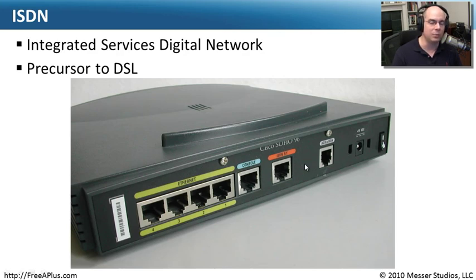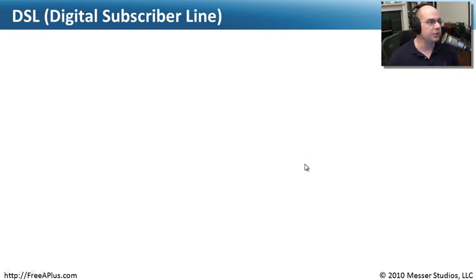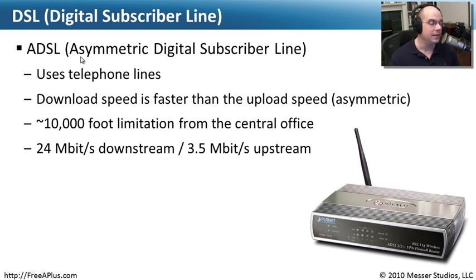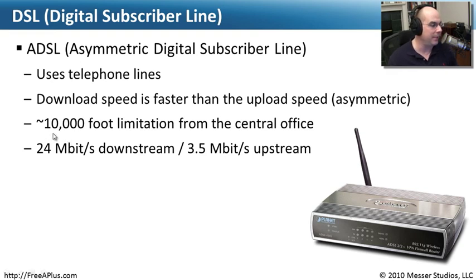DSL — Digital Subscriber Line — is a much more broadly installed technology, especially for internet connectivity. Technically it's called Asymmetric Digital Subscriber Line, or ADSL, because download speed is much faster than upload speed. It still uses the telephone line, so almost everyone can access it. However, there's a significant limitation: you need to be within about 10,000 feet of the central office. Beyond that, digital signals degrade too much and DSL won't work reliably.